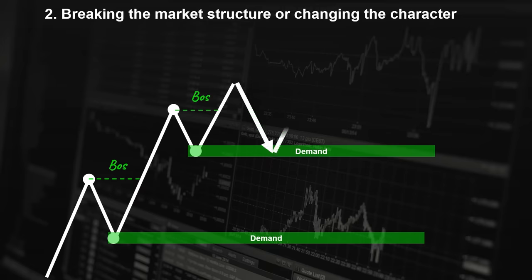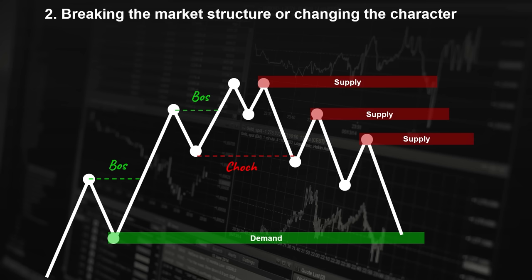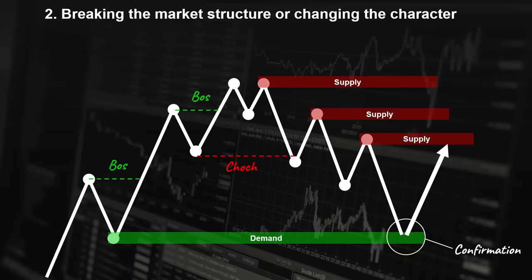If the price returns and revisits this area, it could present a good opportunity to go long. However, if the price manages to break the demand level to the downside, it indicates a change of character, showing bearish momentum. The supply has taken control and a supply zone has formed. We are now bearish until we reach the next unmitigated demand area ahead of the price. After reaching the demand zone, we no longer have a clear directional bias. We have to observe the price action to see if the demand is being respected. If we get confirmation in the lower time frames, we can take long positions with reduced risk. If the price shows no signs of bullish momentum, we can continue looking for short opportunities.